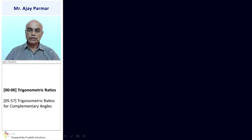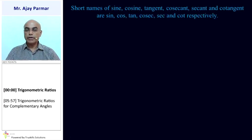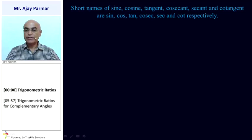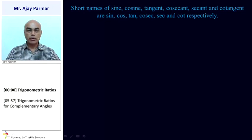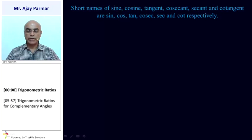Let us first go through the theoretical portion of trigonometry. The short names of the trigonometric ratios — sine, cosine, tangent, cosecant, secant, and cotangent — are denoted as sin, cos, tan, cosec, sec, and cot respectively. These are the six trigonometric ratios that we have.